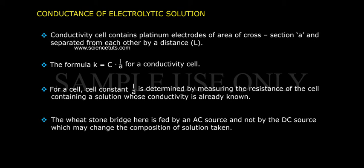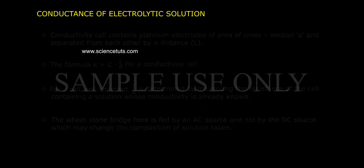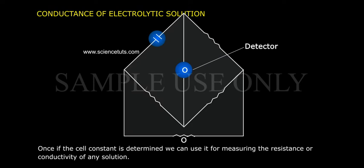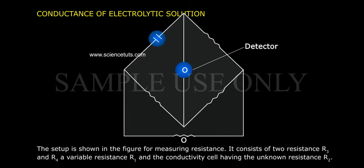The Wheatstone bridge is fed by an alternating current source and not by a direct current source, which may change the composition of the solution taken. Once the cell constant is determined, we can use it for measuring the resistance or conductivity of any solution. The setup is shown in the figure for measuring resistance.